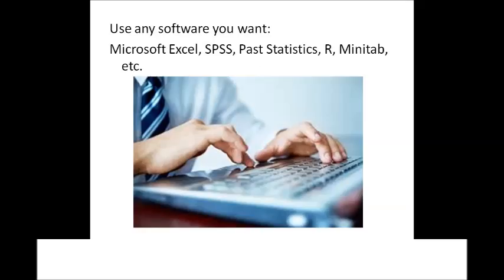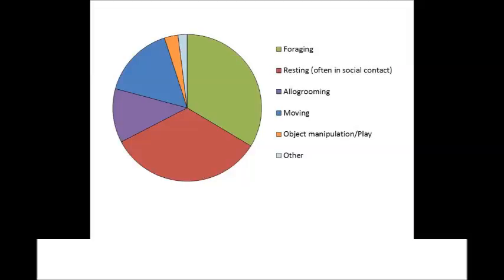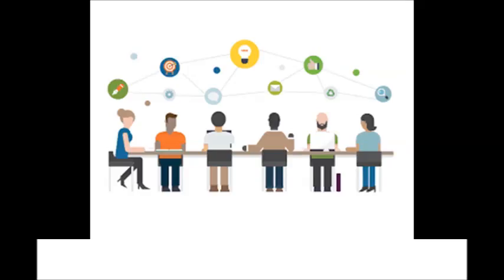Data should be input into statistical software on a computer, and the initial output should be an activity budget of the animals. Further analysis will be introduced in the next lesson. After that, your group should compare your results to other groups. They will certainly differ from each other. You can explain the differences by checking your ethogram, your sampling intervals, and how many students in your group participated in the observation.